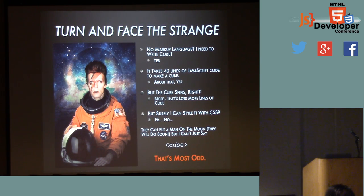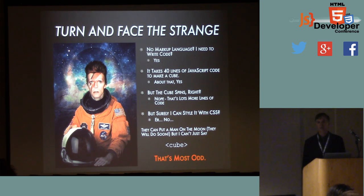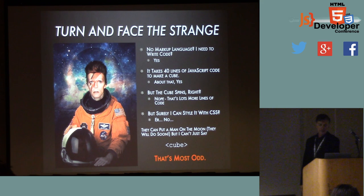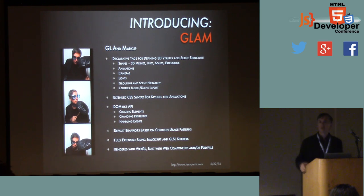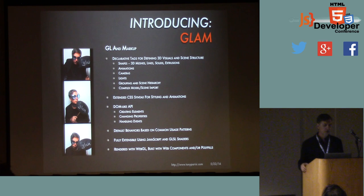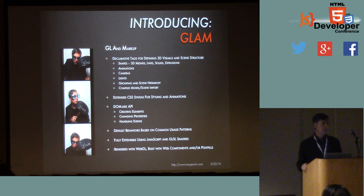Kind of a weird situation. For something as simple as putting a cube on a web page, why can't I just make a tag that says cube? Well, now you can. I'm working on this R&D project — it's up on GitHub right now. And it's called Glam for GL and markup. What Glam does is it gives you a declarative way to make 3D content in your web page.